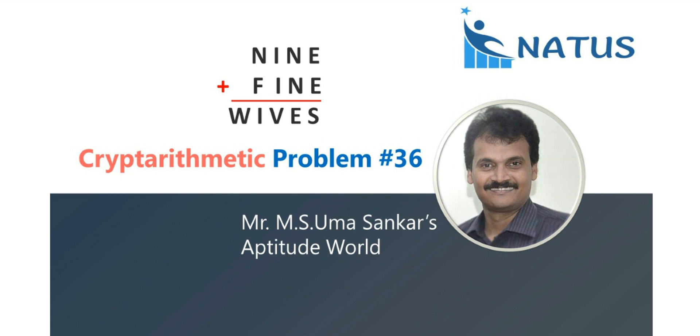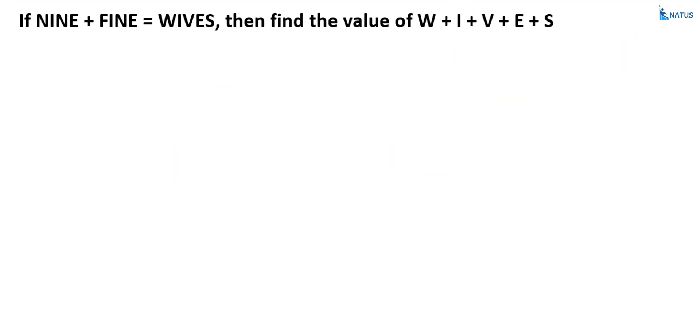Hello everyone. Welcome to NetEase and Aptitude World. In this video, I am going to explain the 36th problem of cryptarithmetic in the cryptarithmetic series: nine plus fine equals wives. Nine plus fine equals wives, then find the value of wives.